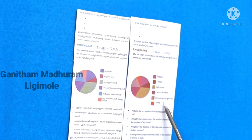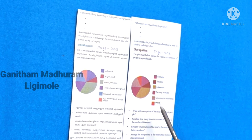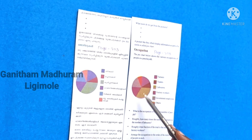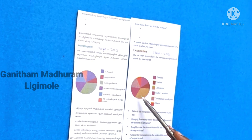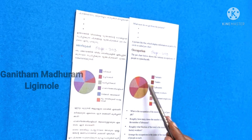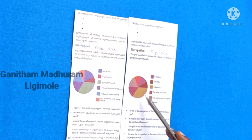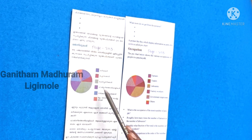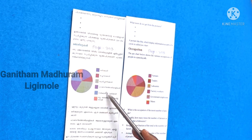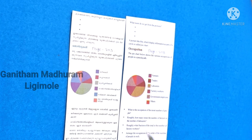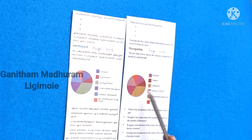How many times the number of farmers is the number of labor? What fraction of the total is the number of factory workers?